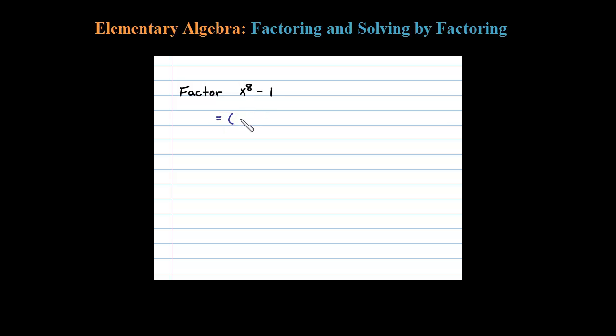So when I factor this, a is x to the fourth. You get a plus b times a minus b. So that's the first factorization using difference of squares.